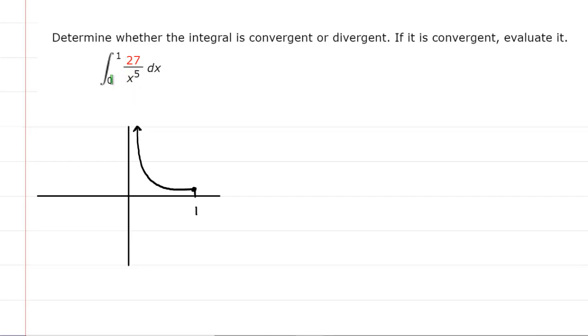But consider the lower bound of 0. If you were to plug 0 into the function, you would have 27 divided by 0 raised to the power of 5. This would give us 27 over 0, which of course is undefined.